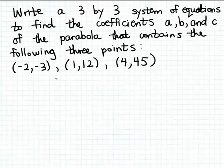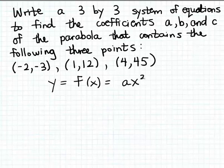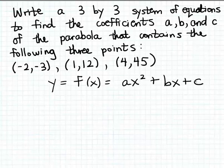To start this problem, let's recall what the formula for a parabola is going to look like. The formula for a parabola written in general form is ax squared plus bx plus c. Here are the three coefficients we want to find: the leading coefficient a, the second coefficient b, and the constant coefficient c.